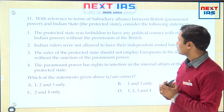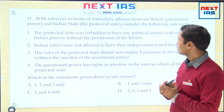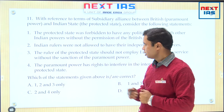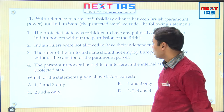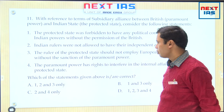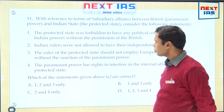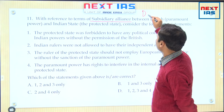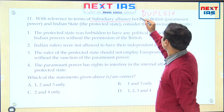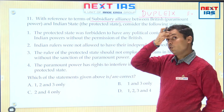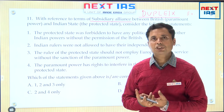Next question: with reference to the terms of subsidiary alliance between British and Indian states, consider the following statements. The protected state was forbidden to have any political contact with other Indian powers without British permission. Indian rulers were not allowed to have their independent armed forces. The ruler of the protected state should not employ Europeans without sanction of the paramount power. The paramount power has rights to interfere in the internal affairs of the protected state. Subsidiary alliance was an innovative system, first designed and thought of by French Governor Dupleix, who first conceived of subsidiary alliance.